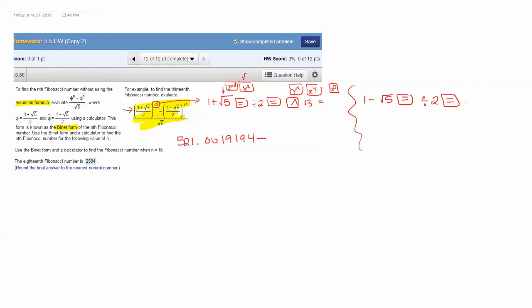Now your calculator should say negative 0.6180339887. Leave that number there. Don't clear it. Now you want to do your power, to the 13th equals and write this number down. I wrote down originally 521.0019194 minus this answer in parentheses: negative 0.0019193787 and I'm not rounding that.